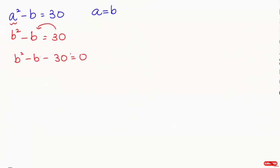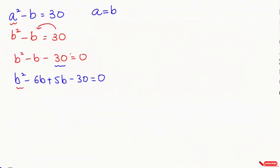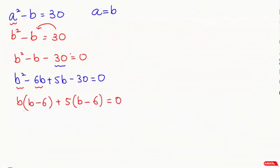Here I'm going to factor this expression. We need two numbers whose product is 30 and whose difference is 1. So we write b squared minus 6b plus 5b minus 30 equals 0. Taking the common factor b from the first two terms: b(b minus 6) plus 5(b minus 6) equals 0.